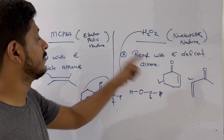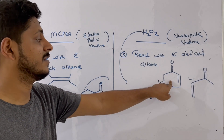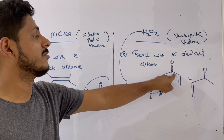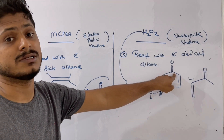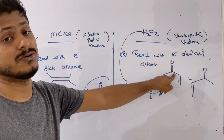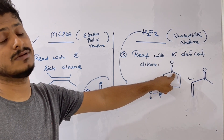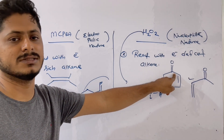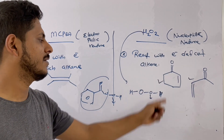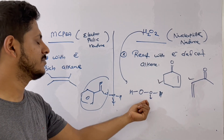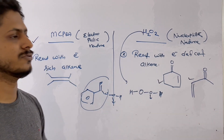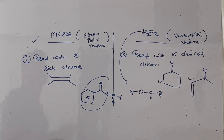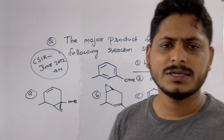If you use mCPBA on a substrate containing a ketone, mCPBA will undergo Baeyer-Villiger oxidation due to the ketone group — there is competition between Baeyer-Villiger oxidation and epoxidation. So we cannot use mCPBA; we must use H₂O₂. This differentiation you have to understand.